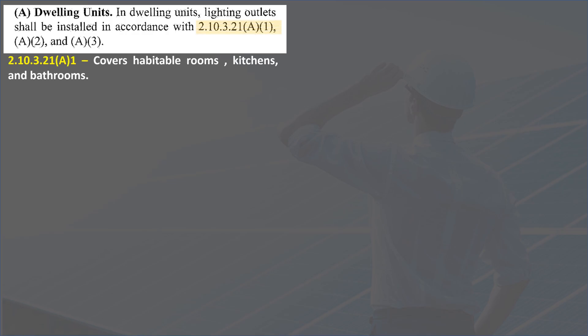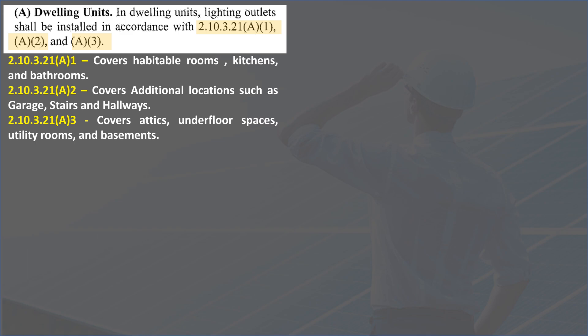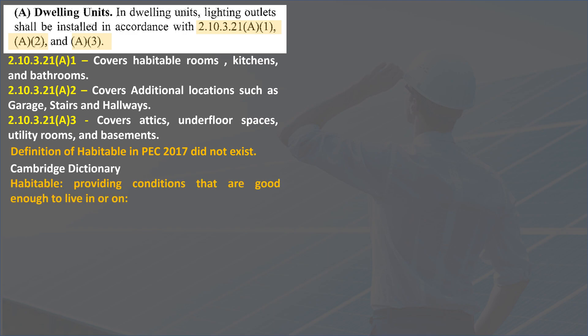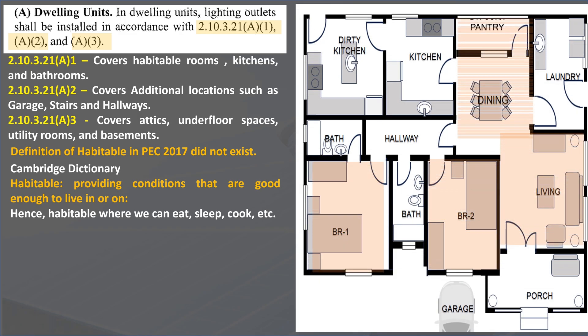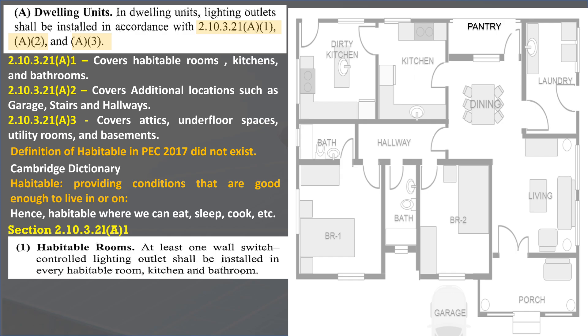Required lighting outlet provisions for dwelling units are divided into three subsections under 2.10.3.21(a). The first subsection covers lighting outlet provisions for habitable rooms, kitchens, and bathrooms. The second contains requirements for hallways, stairways, and garages. The last subsection covers attics, underfloor spaces, utility rooms, and basements. What is a habitable room? Referring to the Cambridge Dictionary, habitable means providing conditions good enough to live in — areas where we can eat, sleep, and cook, such as bedrooms, living rooms, and dining areas.